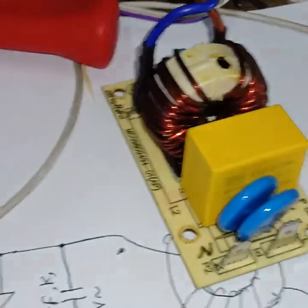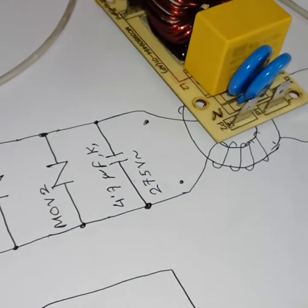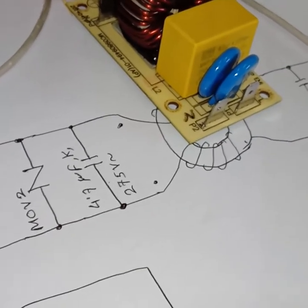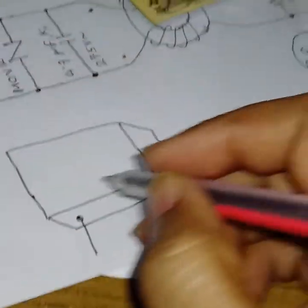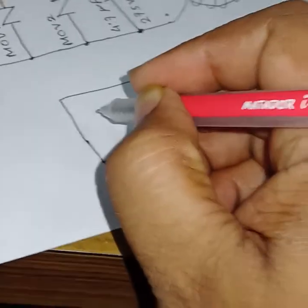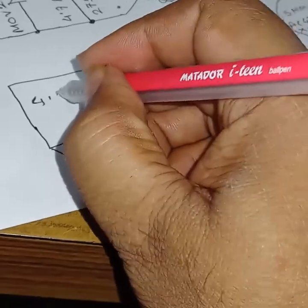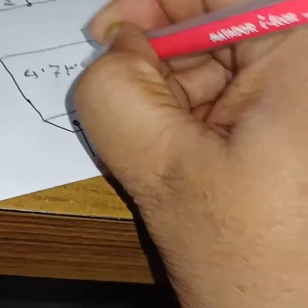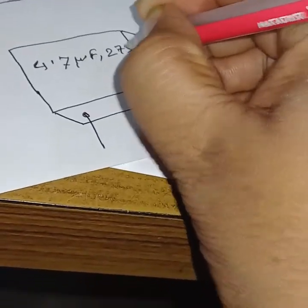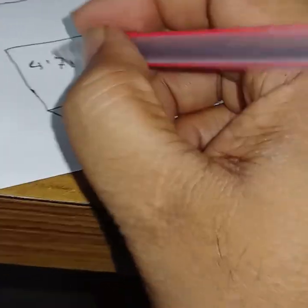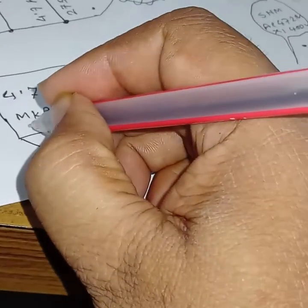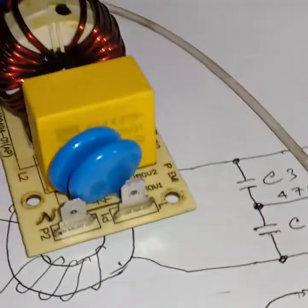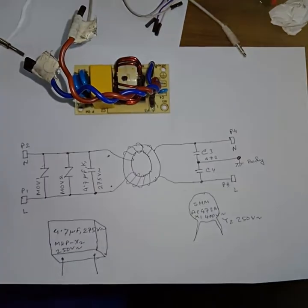For this big capacitor, the values are written as: 4.7M (microfarad), 275V AC, then AMK, AMK P P, X2, 250V AC. This is all written on the big capacitor. We have successfully done the reverse engineering of the input line filter.